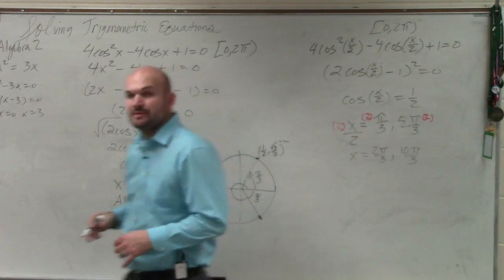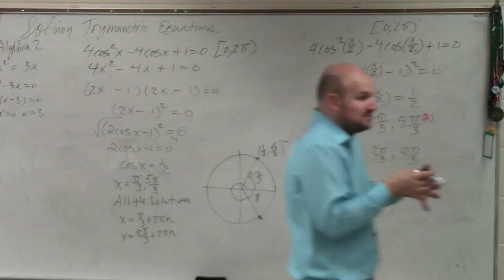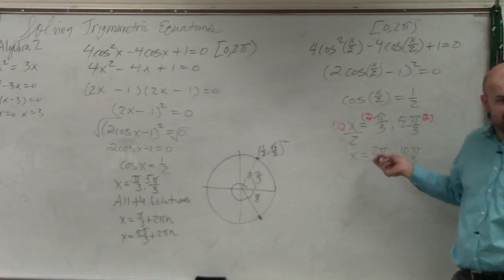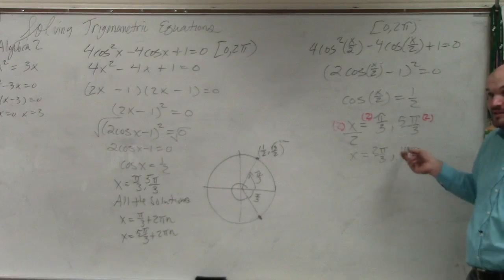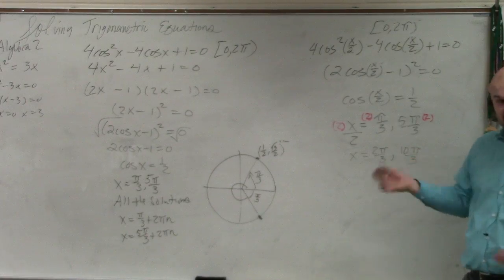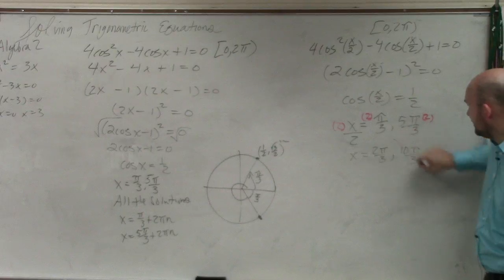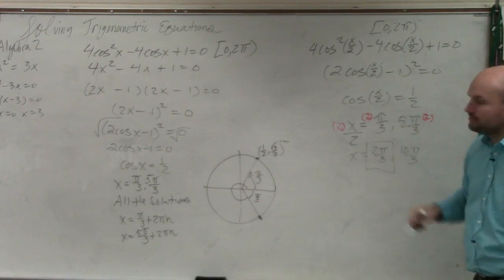But remember, ladies and gentlemen, our solutions has to be between 0 and 2 pi. Is 2 pi over 3 within that constraint? Is 10 pi over 3 within that constraint? No, because 6 pi over 3 is 2 pi, right? So that's too big. So 2 pi over 3 is your only answer.